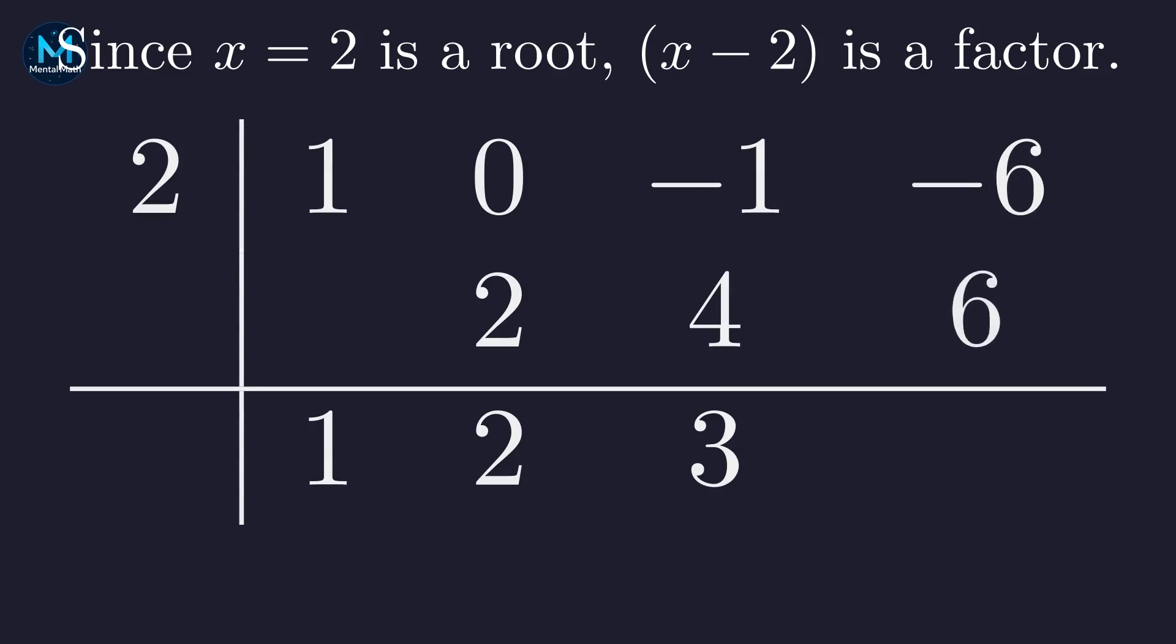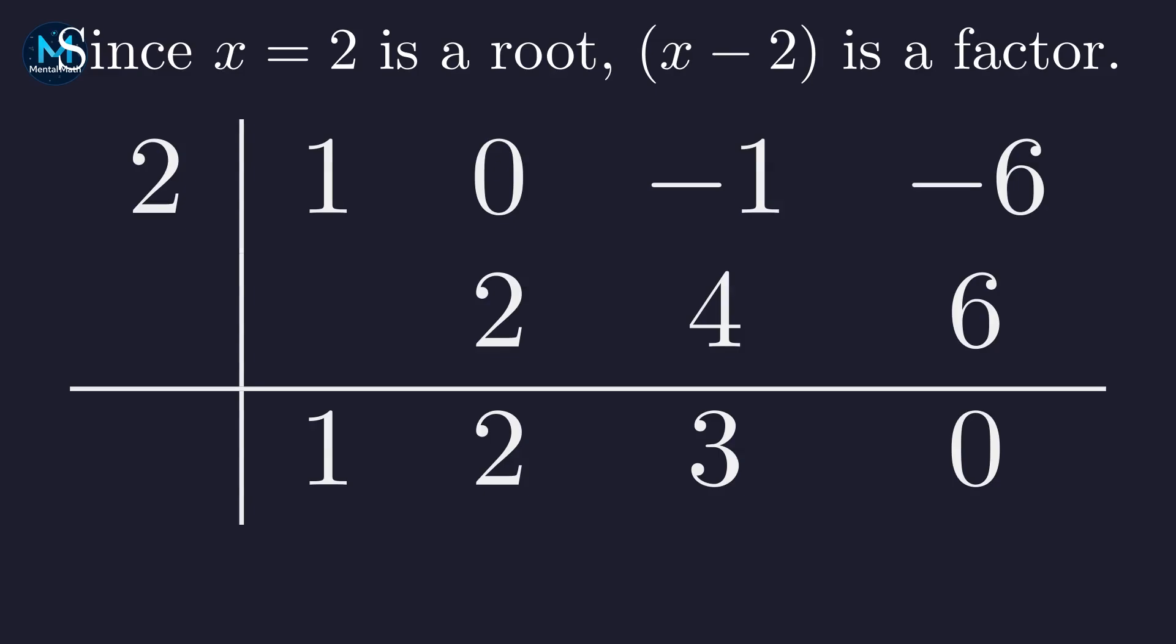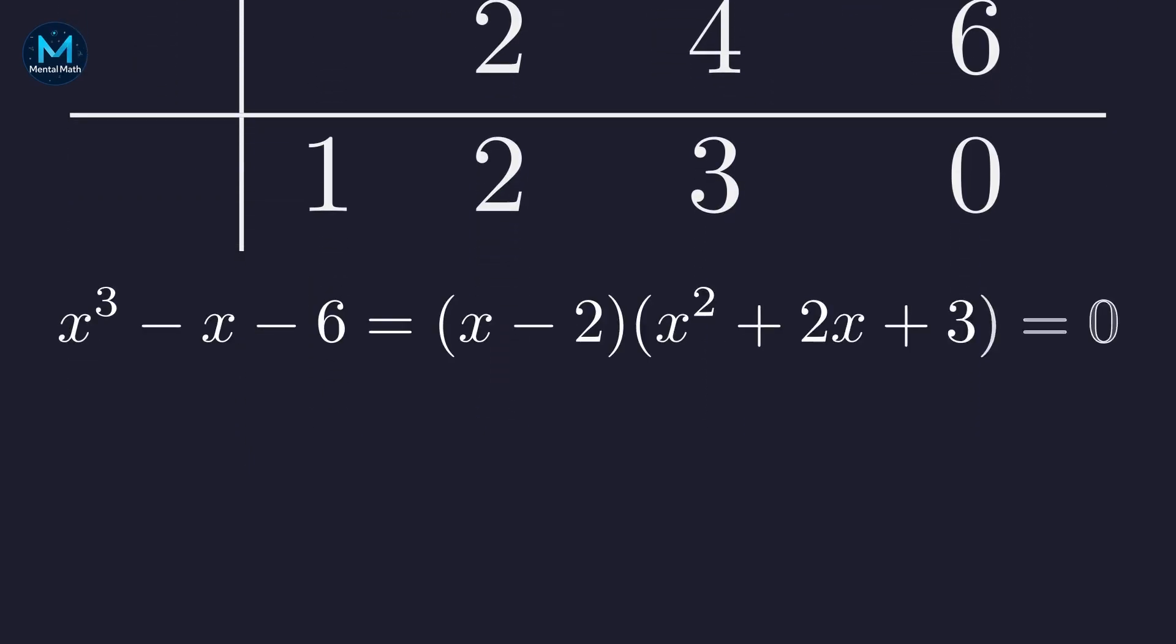One last time, 2 times 3 is 6. And for our final sum, negative 6 plus 6 is 0. This 0 remainder confirms that 2 is indeed a root. The numbers on the bottom row are the coefficients of our resulting quadratic factor. Our factored form is x minus 2 times x squared plus 2x plus 3 equals 0.